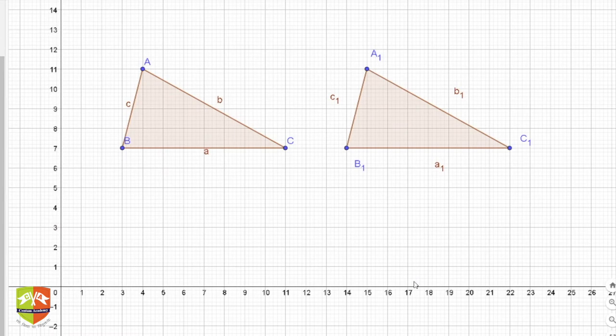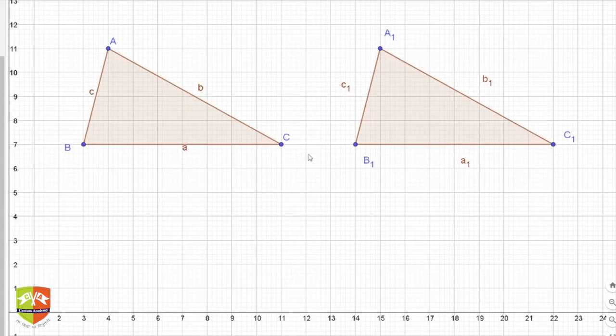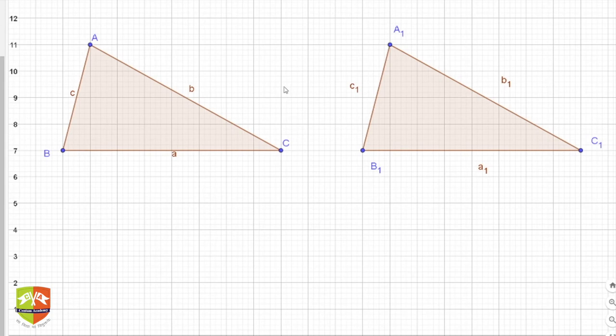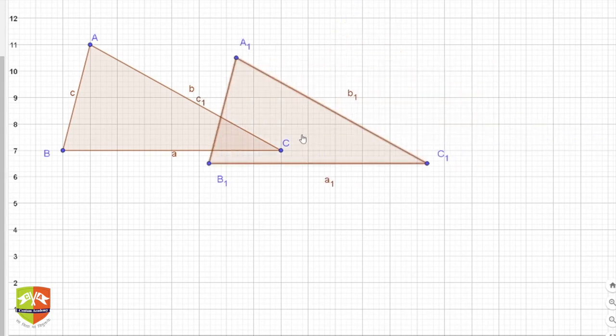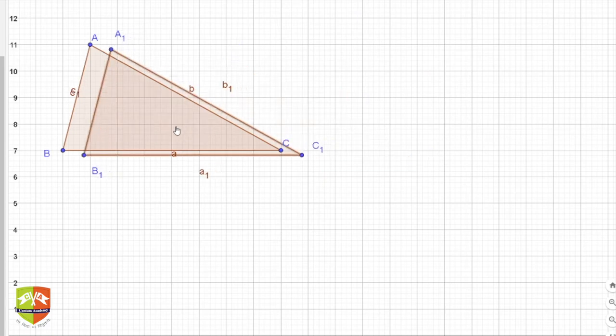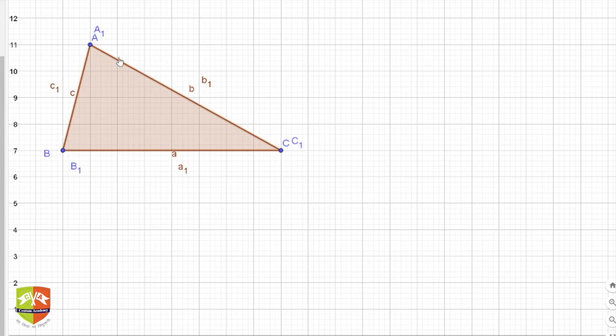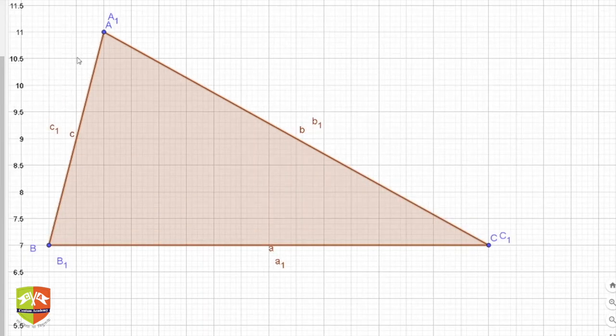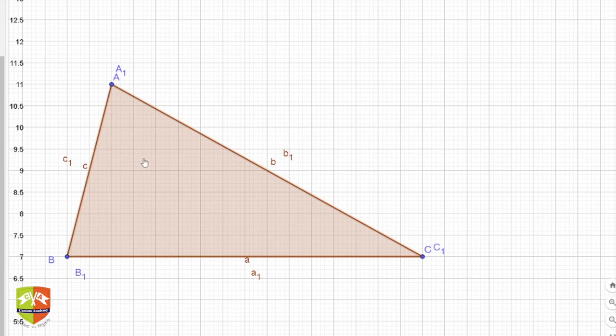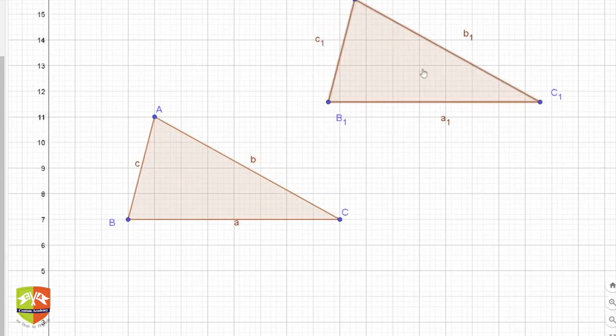So here we have taken two triangles: triangle ABC and triangle A₁B₁C₁. What is meant by congruent triangles is that if you have a close look at both of these, they look exactly the same. If I take this one and try to superpose it on ABC, it will sit exactly like that. You can see it fits exactly.